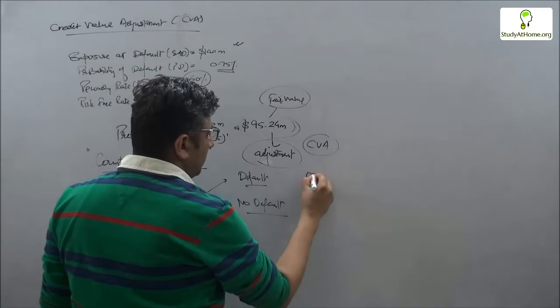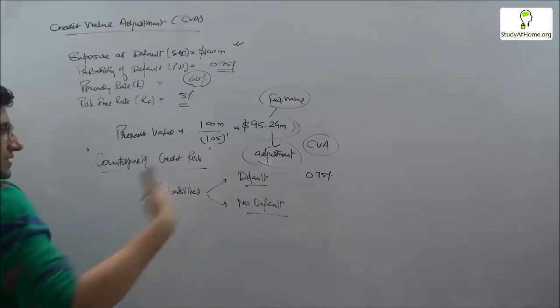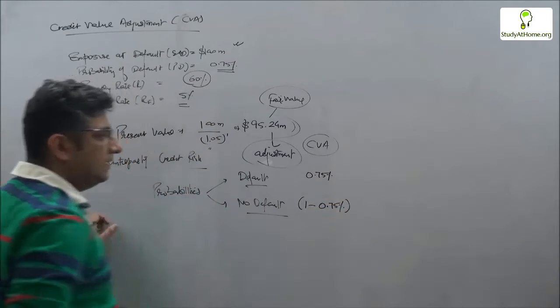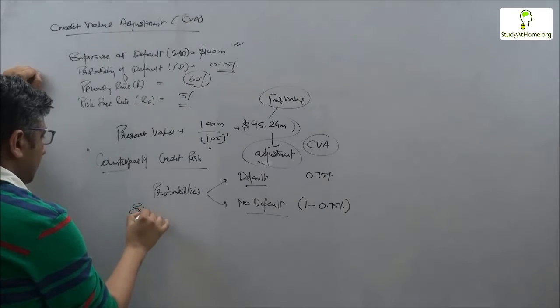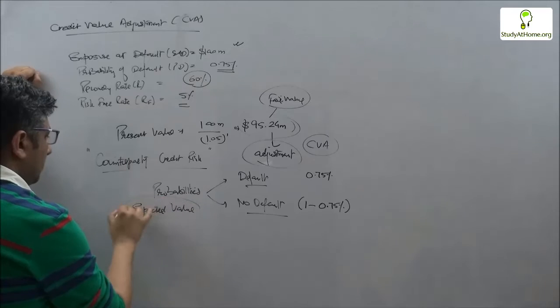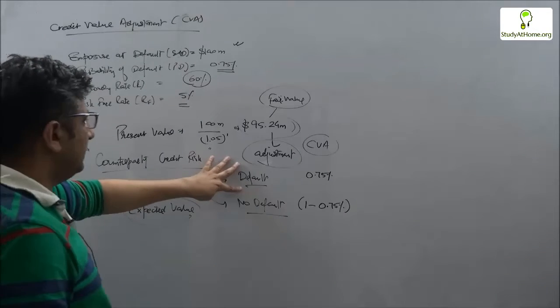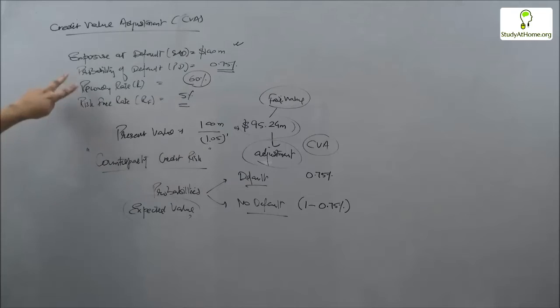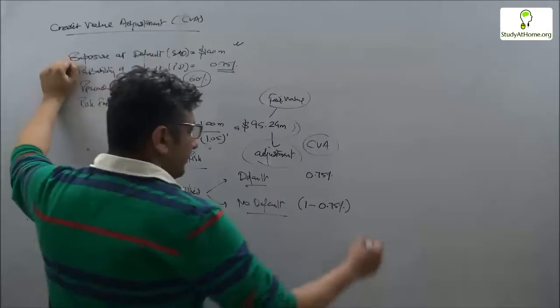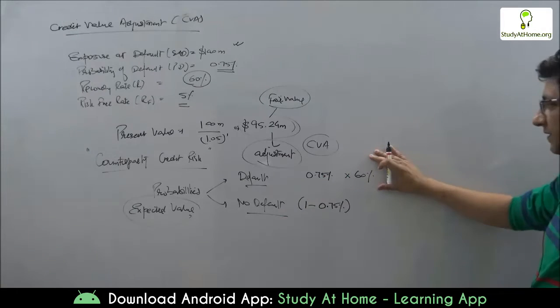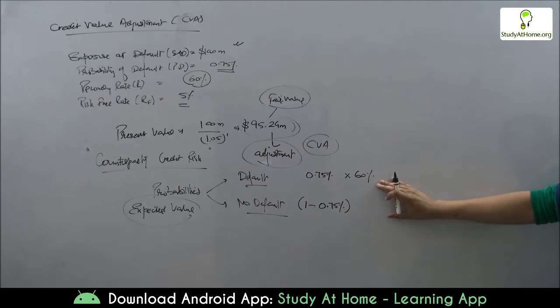What if a default happens? We are given the probability of default at 0.75 percent. But what if default does not happen? Then the probability would be 1 minus 0.75 percent. We need to bring the expectations or the expected value looking at these two possibilities through the binomial model. If the counterparty defaults, my recovery rate is 60 percent.